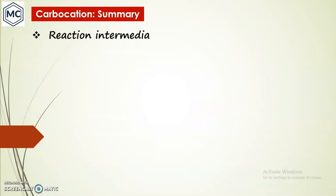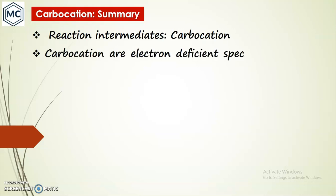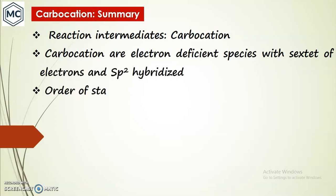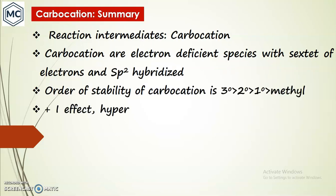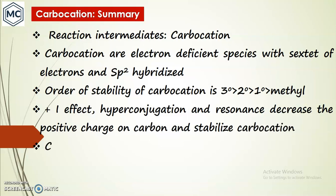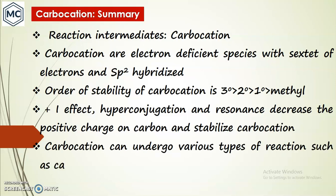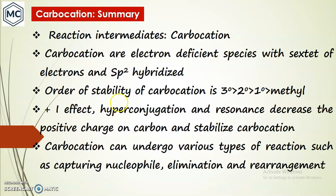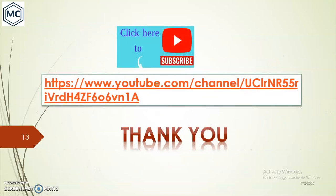In summary, we studied reaction intermediates and carbocations. Carbocations are electron-deficient species with only six valence electrons and are sp2 hybridized. The order of stability is tertiary > secondary > primary > methyl, due to the +I (inductive) effect, hyperconjugation, or resonance, all of which decrease the positive charge on the carbon. Carbocations can undergo reactions such as nucleophilic capture, elimination, and rearrangement. Thank you for watching.